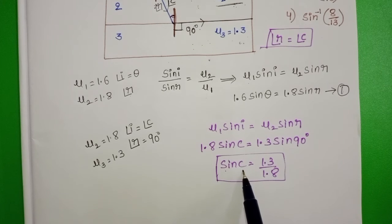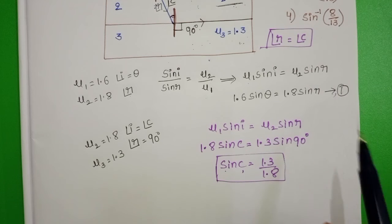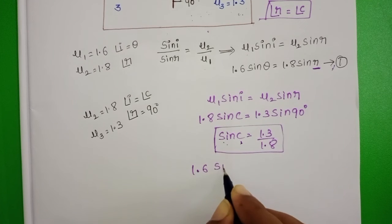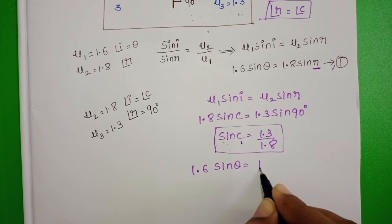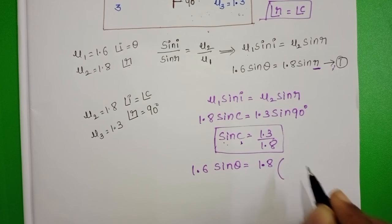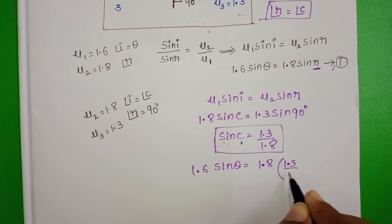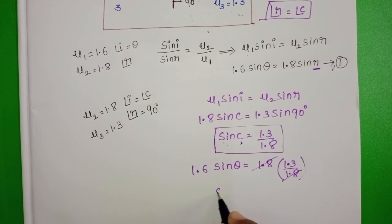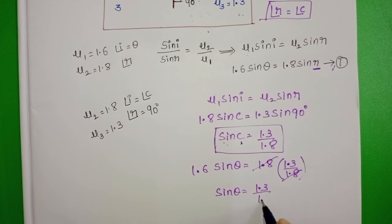Substitute sin c in equation 1. 1.6 sin theta equals 1.8 into 1.3 by 1.8. Here 1.8 gets cancelled. From this, sin theta equals 1.3 by 1.6.